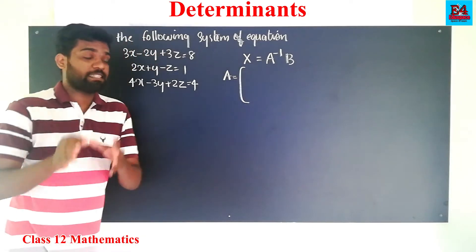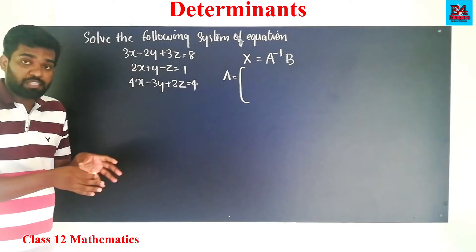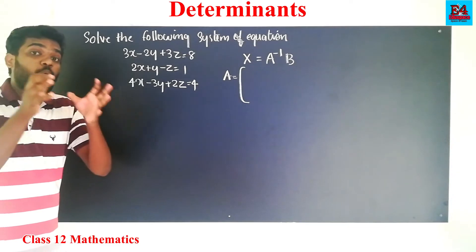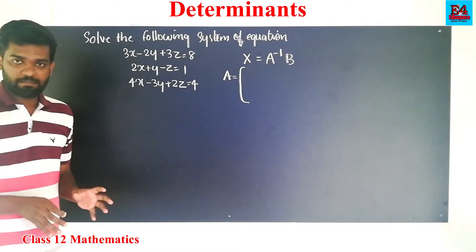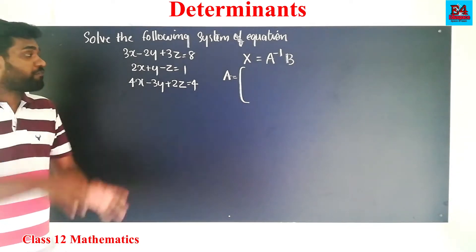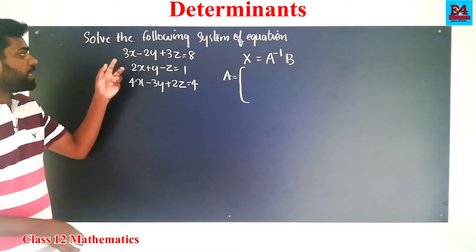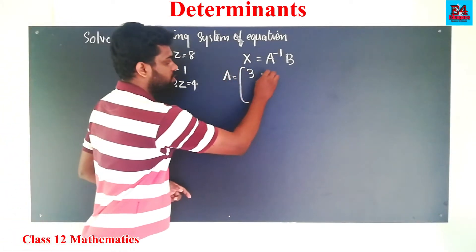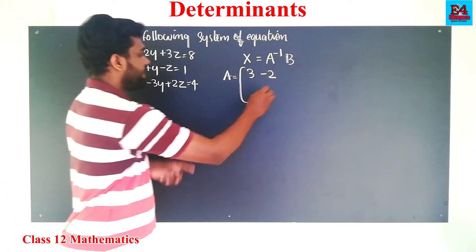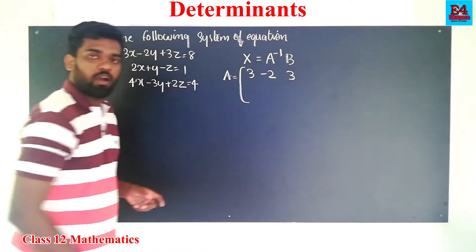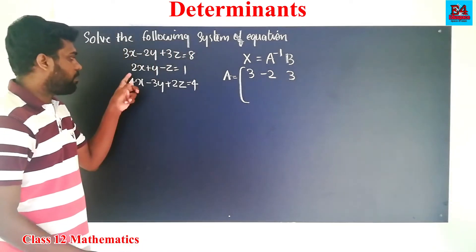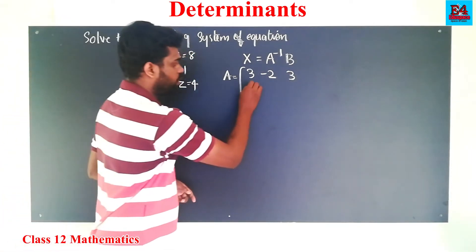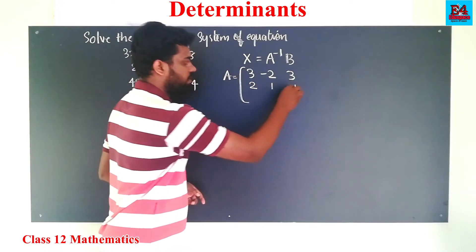This is a matrix. We have the equation where x, y, and z are coefficients. The first row: x coefficient is 3, y coefficient is minus 2, z is 3. Second row: 2, 1, minus 1.